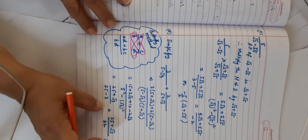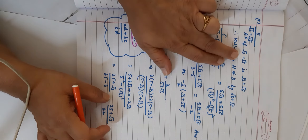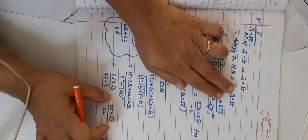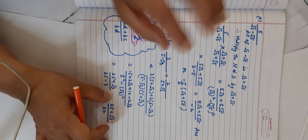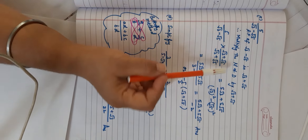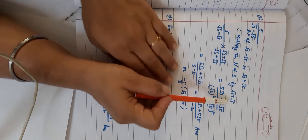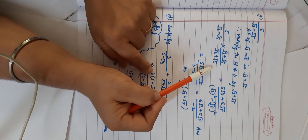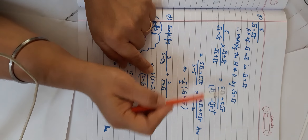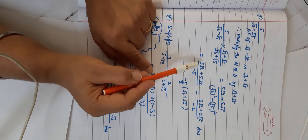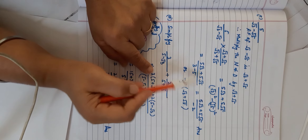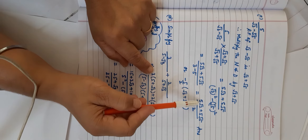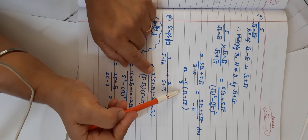Next: 5/(√3−√5). The rationalizing factor is (√3+√5), the conjugate. Multiply numerator and denominator by (√3+√5): 5(√3+√5)/((√3)²−(√5)²) = (5√3+5√5)/(3−5) = (5√3+5√5)/(−2). We can also write this as −5/2 × (√3+√5).